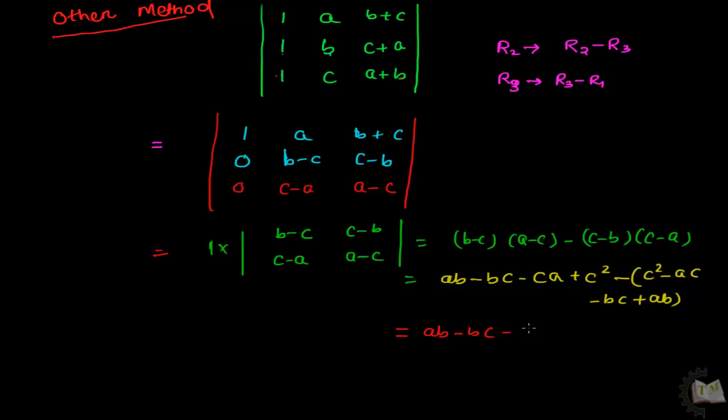And after simplification it will be, okay, ab, ab cancel out, bc, bc cancel out, ca, ac cancel out.